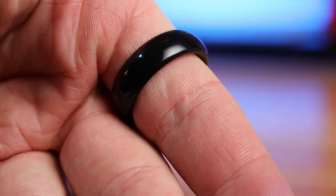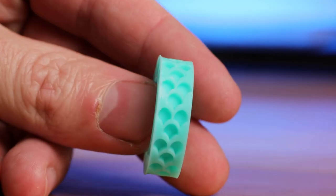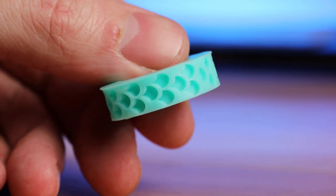And with this ring pretty much done, we can move on to a different style of ring, which is the dragon scale one. And I'm going to fill all the different scales with a different color resin.